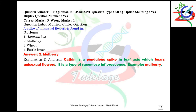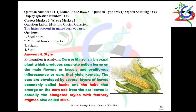Question number eleven: the hairs present in maize corn cob are what? Maize is a bisexual plant producing separate pollen on male flowers or tassels, and ovuliferous inflorescence or ears that yield kernels. The ears are enveloped by husks, and the hairs emerging from the ear are actually elongated styles with feathery stigma, also called silks. The options are seed hairs, modified hairs of bract, stigma, and style. The correct option is elongated styles with feathery stigma — this is considered a controversial question.